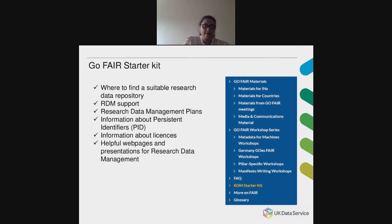The GoFair Starter Kit is in fact a list of resources prepared by the GoFair International Support and Coordination Office. It is meant to be a starter kit for research data management, offering an open and inclusive ecosystem for individuals, institutions, and organizations working together. The kit includes guidance on finding an appropriate data repository, where to publish your data, research data management support, information on permanent identifiers, licenses, and useful web pages and presentations.